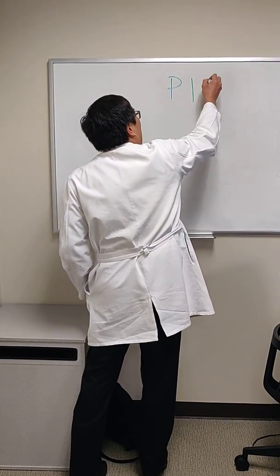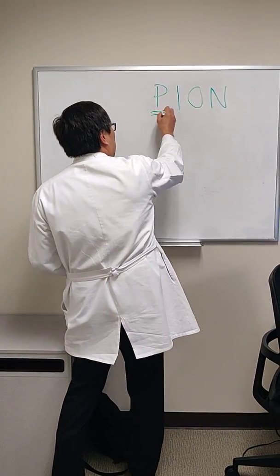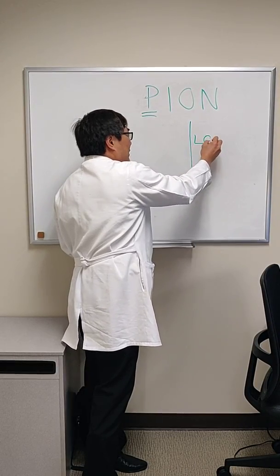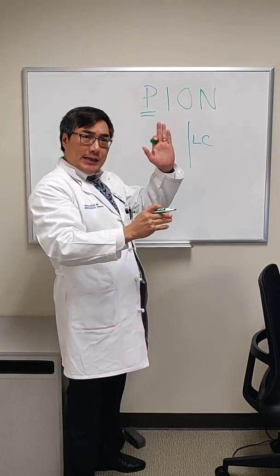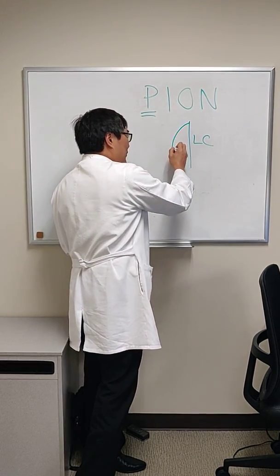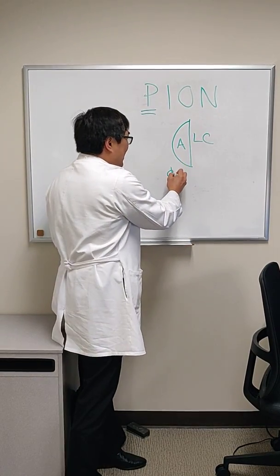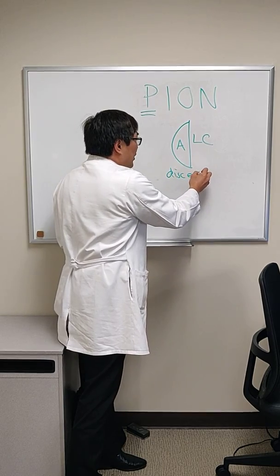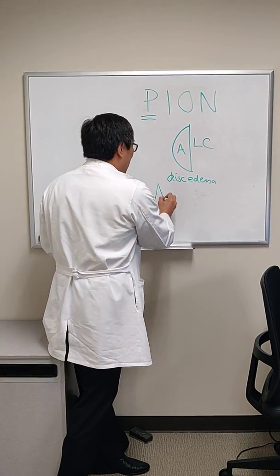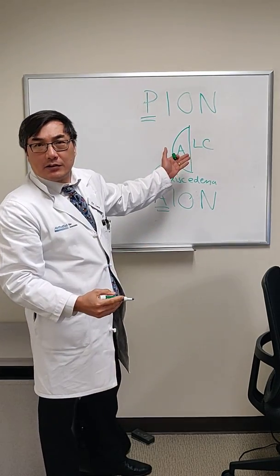Today we're going to be talking about PION, Posterior Ischemic Optic Neuropathy. The P is for posterior because what we're posterior to is the Lamina Cribrosa. The Lamina Cribrosa separates the eye — the intraocular portion — from the extraocular portion. Normally when we have ischemia of the optic nerve, it's anterior to the Lamina Cribrosa, and that means we can see disc edema. The normal ischemic optic neuropathy — ION — is anterior ischemic optic neuropathy, meaning anterior to the Lamina Cribrosa.